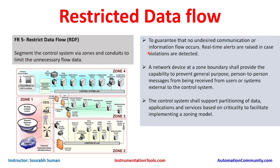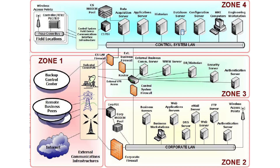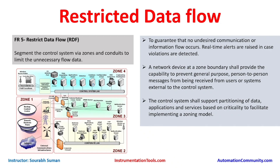This is the requirement as per the IEC 62443 standard. Looking at this diagram, we have previously discussed this architecture — it is not exactly the Purdue model but can be viewed as a zone model. We implement restricted data flow to guarantee that no undesired communication or information flow occurs between two zones. The first aim is to prevent undesired communication, and real-time alerts are raised when violations are detected. For example, if a firewall is placed between Zone 2 and Zone 3, any illegitimate or undesired communication will cause the firewall to drop the packet and raise an alert, which is sent to the log server or SIEM.